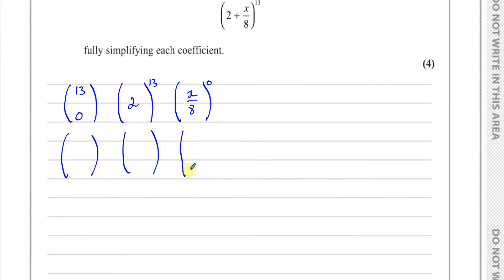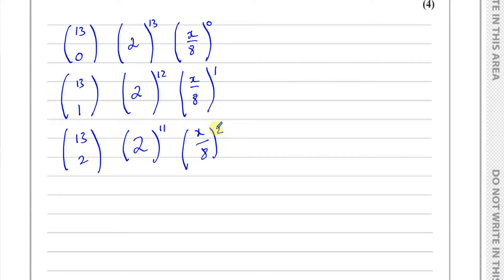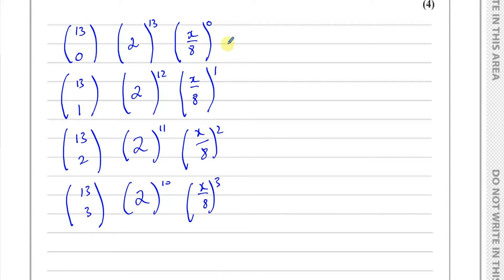For the second term, you have x/8 to the power of 1 and 2 to the power of 12, with 13C1. This number keeps increasing by 1, these two always add up to 13 — so this one increases and this one decreases. Then you have 13C2, 2 to the power of 11, and x/8 to the power of 2. Then 13C3, 2 to the power of 10, and x/8 to the power of 3.